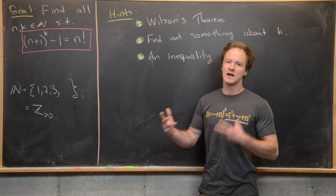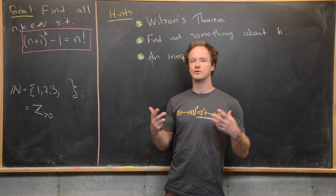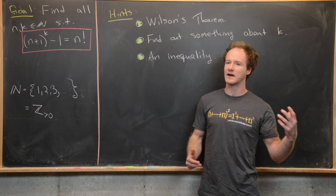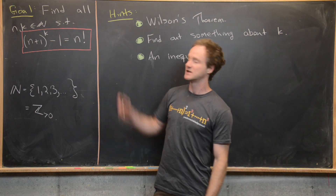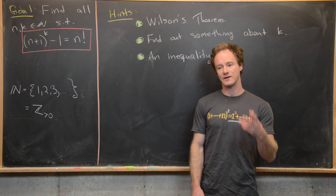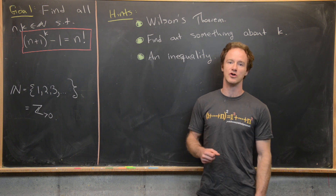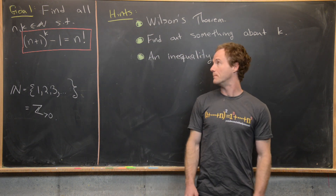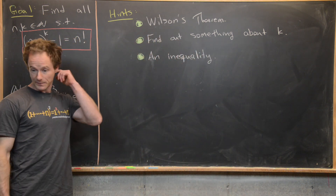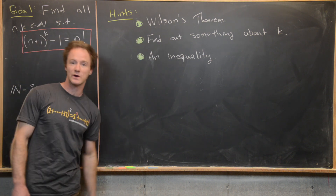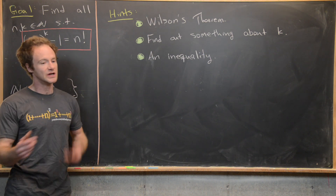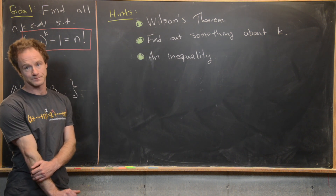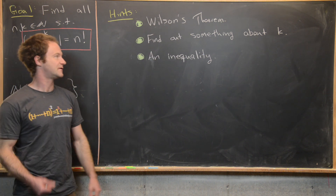The general strategy for these problems — solving over the natural numbers or integers — is that you should probably have between 0 and 4 or 5 solutions, find those small ones by hand, and then show there are no larger solutions. So after a certain value of n or k there are no bigger solutions. Some hints: you'll want to use Wilson's theorem, discover something about k, and then finish with an inequality.